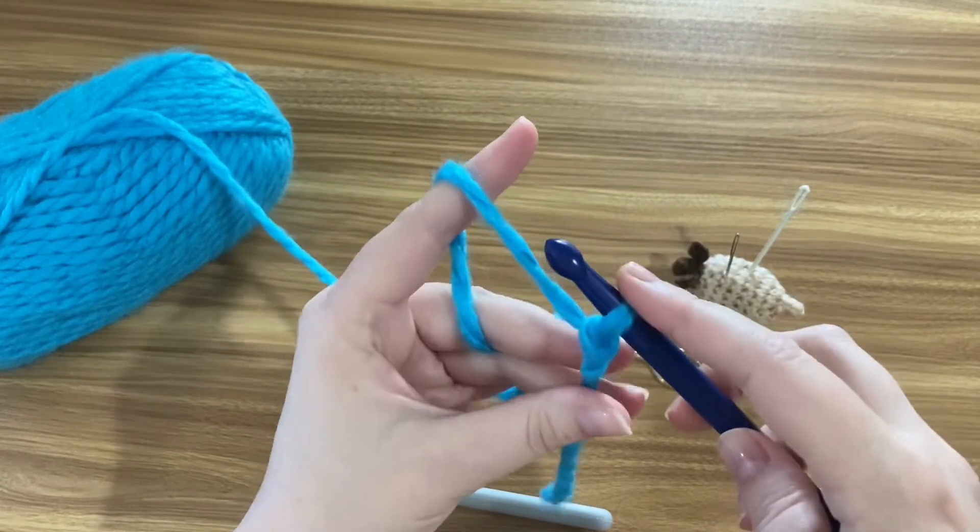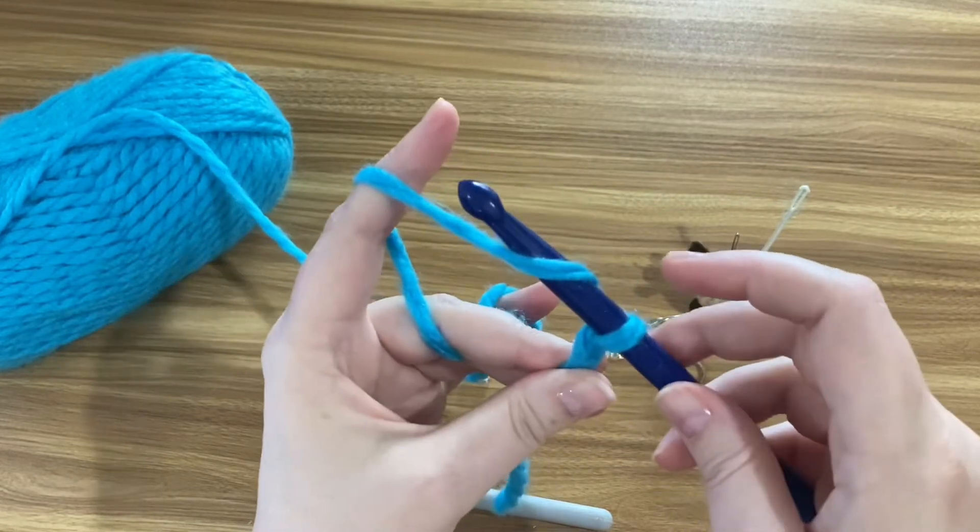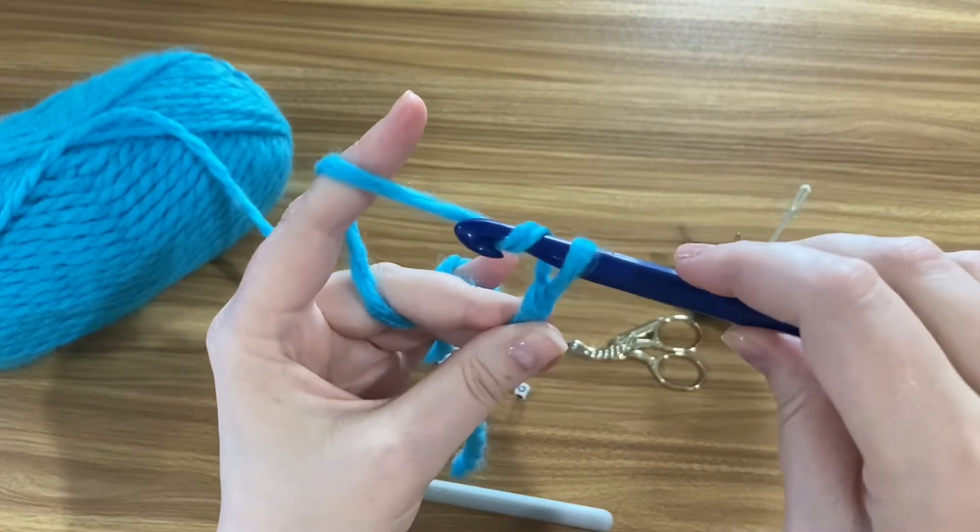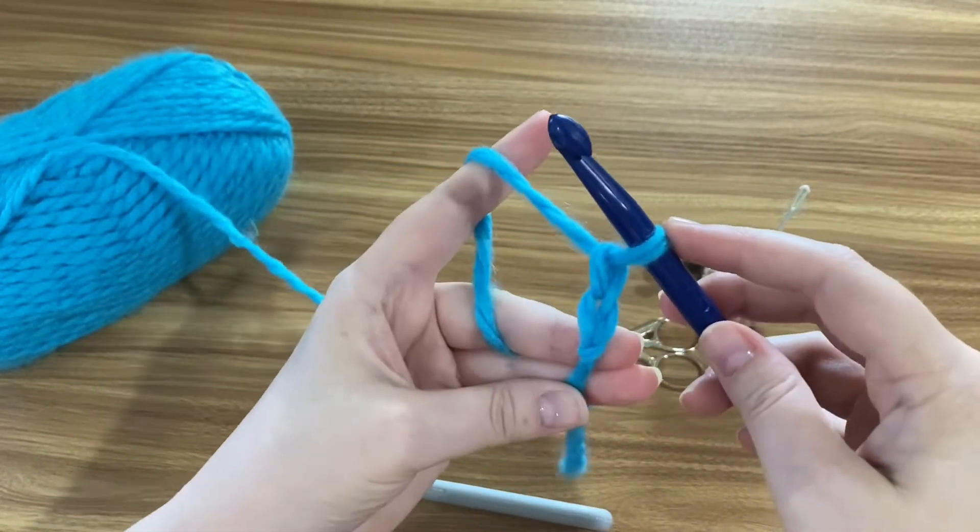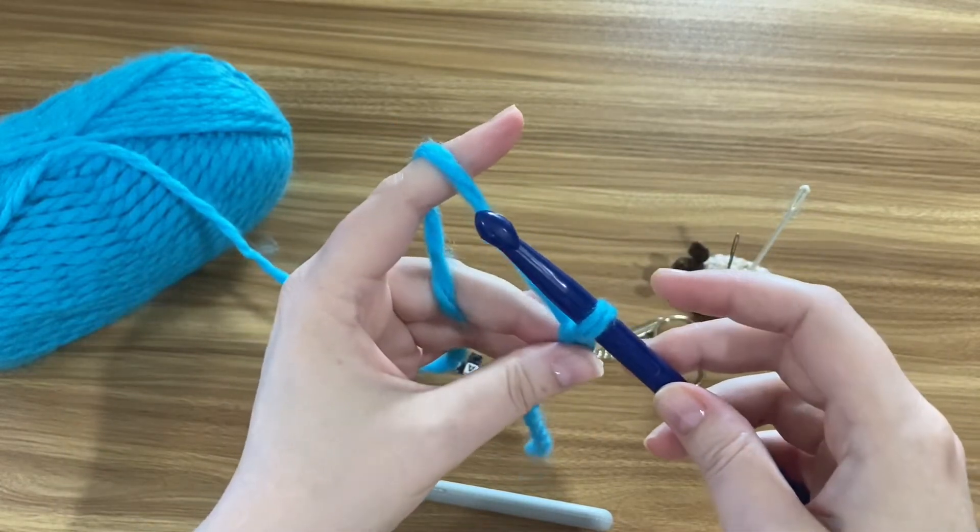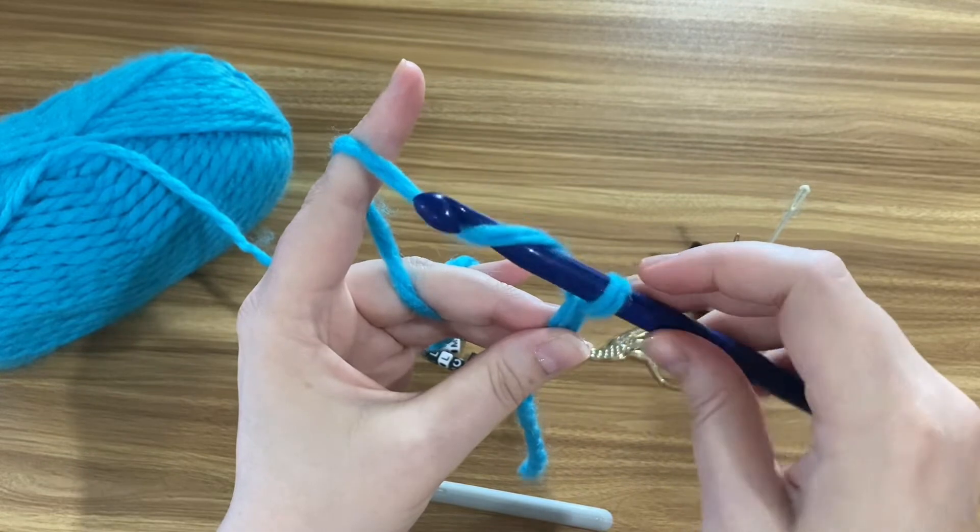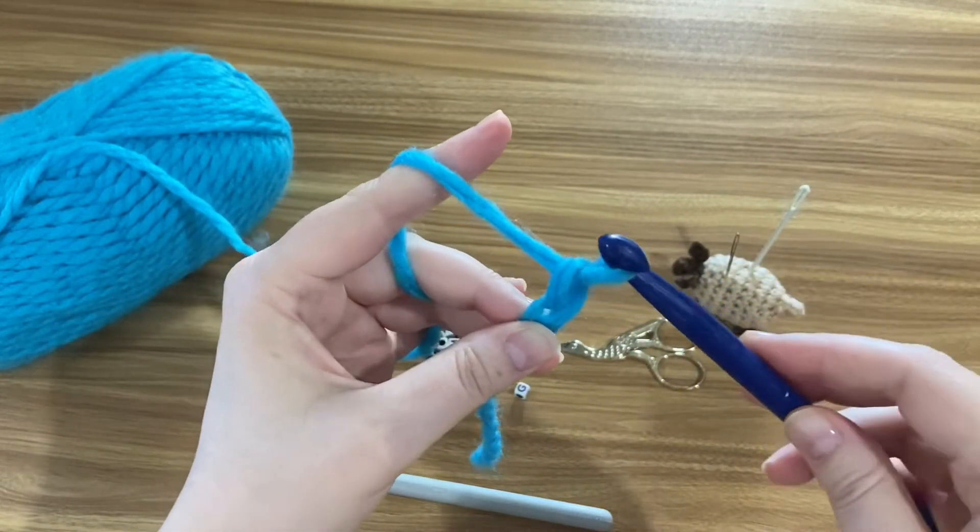Let's do it again. Yarn over, bring the yarn from the back of the hook to the front, turn your hook so its hook is downward, use the hook to pull the yarn through the loop. One more time. Yarn over. You can move the hook and the yarn at the same time or just one of the two. Turn the hook downward slightly and use it to drag the yarn through the loop on your hook.